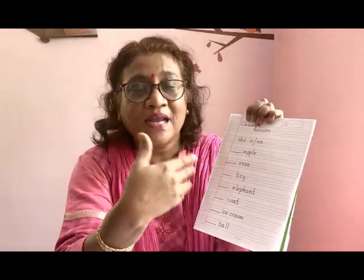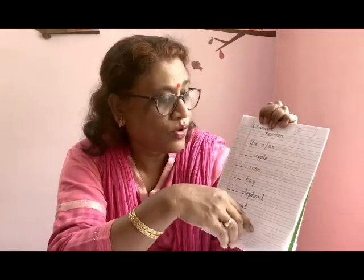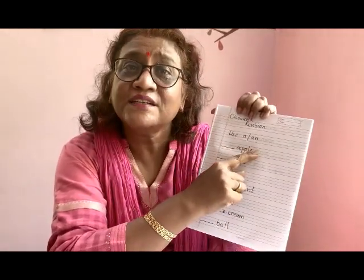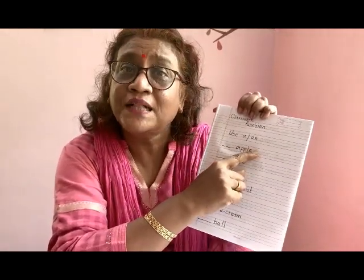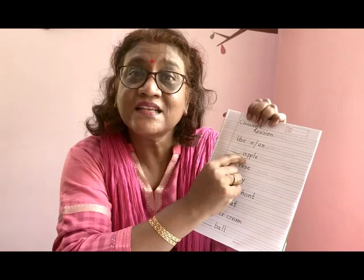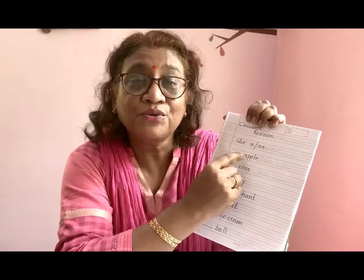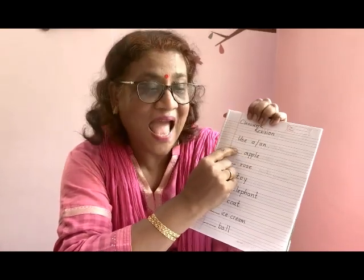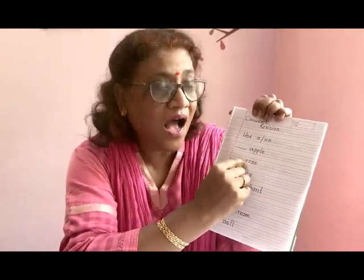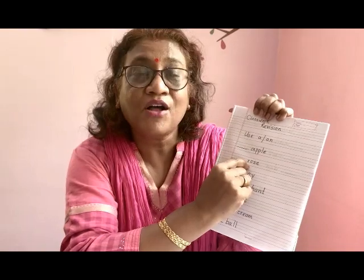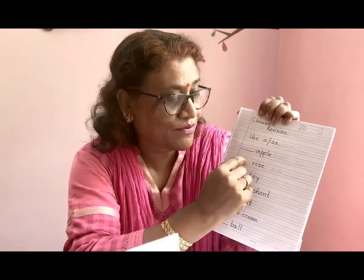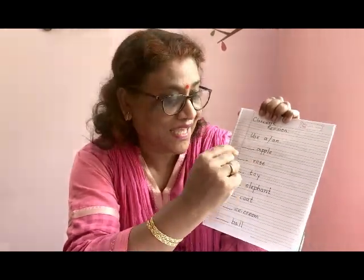Let us do this orally. What will you write in front of apple? A — it is a vowel, so you will write 'an'. Rose — it is R, it is a consonant, so what will you write? You will write 'a'.